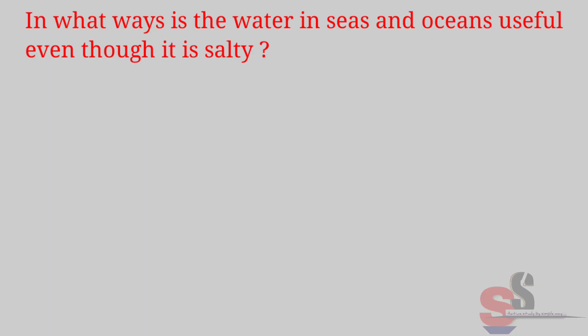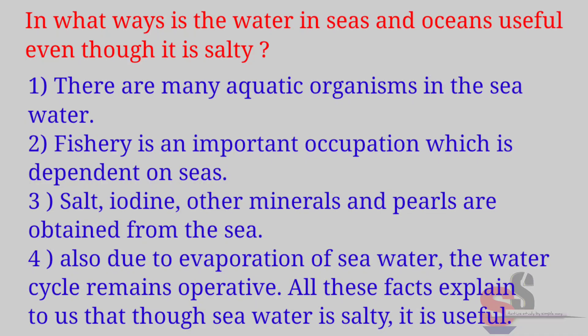Find out: In what ways is the water in seas and oceans useful even though it is salty? Answer: There are many aquatic organisms in the sea water. Fishery is an important occupation which is dependent on sea. Salt, iodine, other minerals and pearls are obtained from the sea. Also, due to evaporation of sea water, the water cycle remains operative. All these facts explain that though sea water is salty, it is useful.